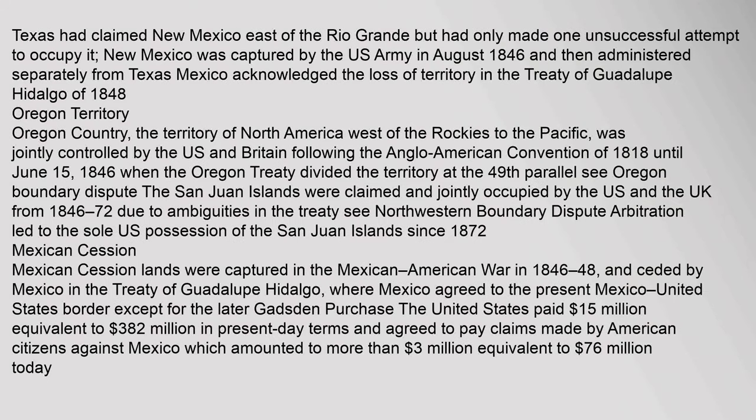Texas had claimed New Mexico east of the Rio Grande but had only made one unsuccessful attempt to occupy it. New Mexico was captured by the U.S. Army in August 1846 and then administered separately from Texas. Mexico acknowledged the loss of territory in the Treaty of Guadalupe Hidalgo of 1848.